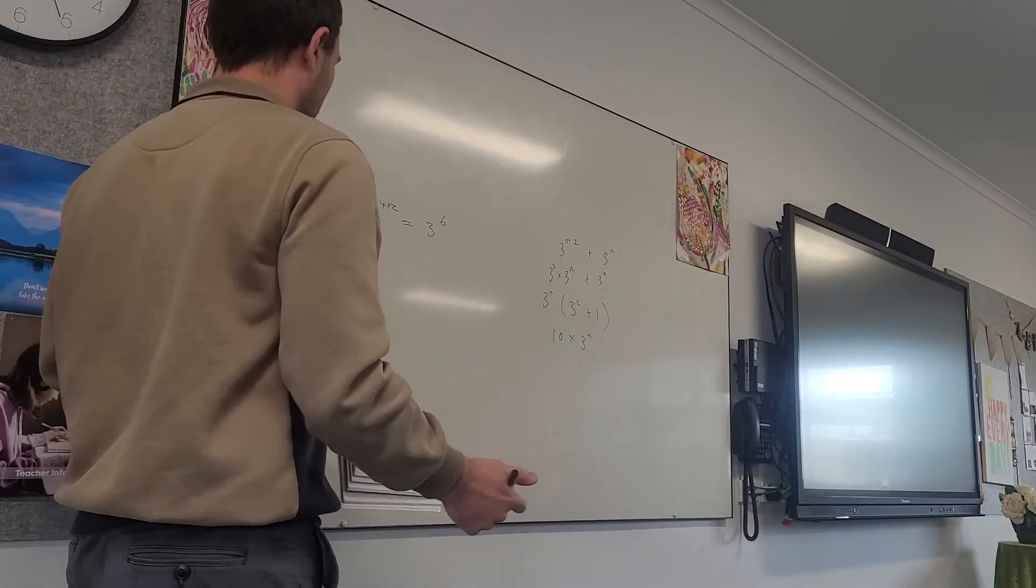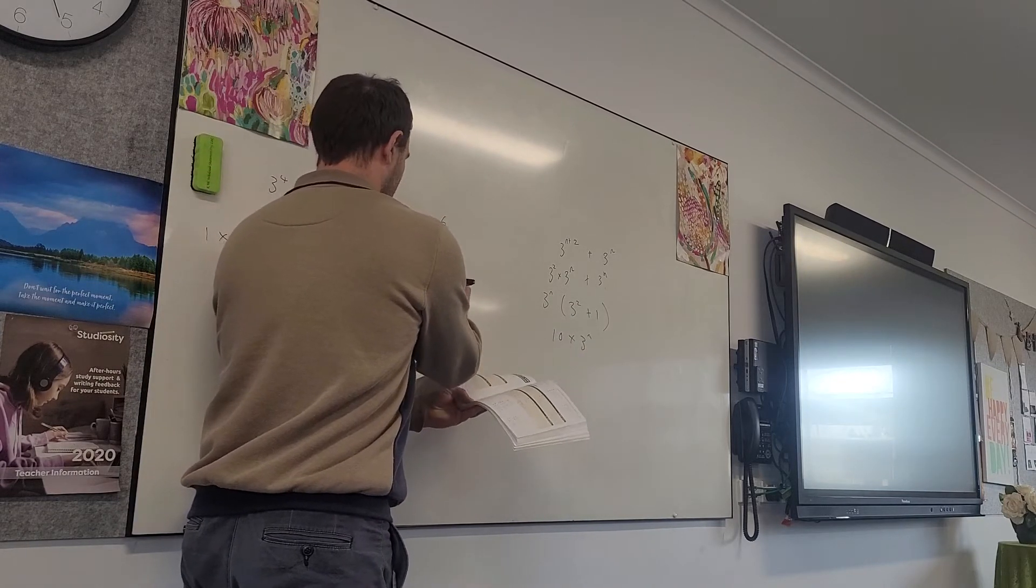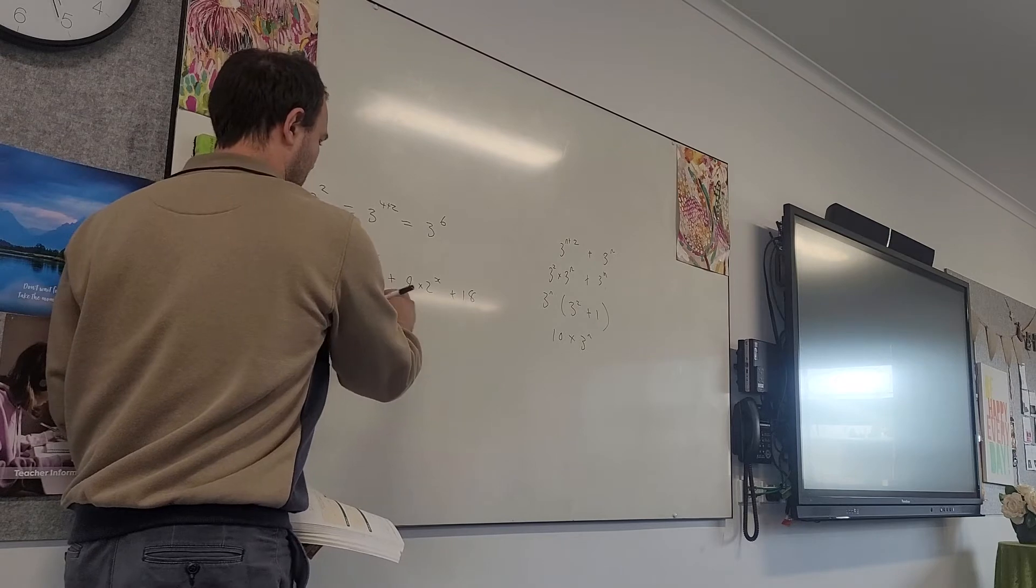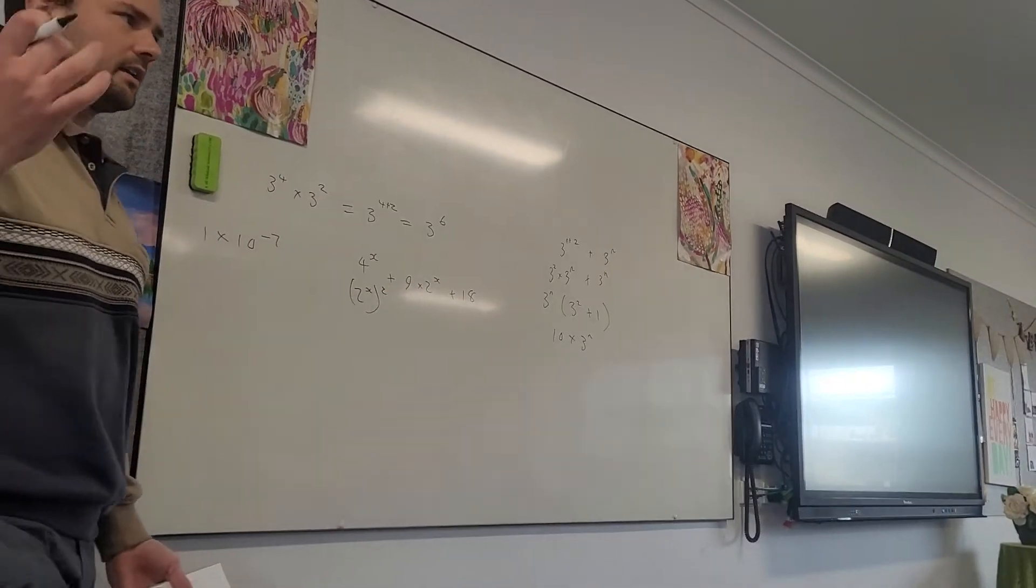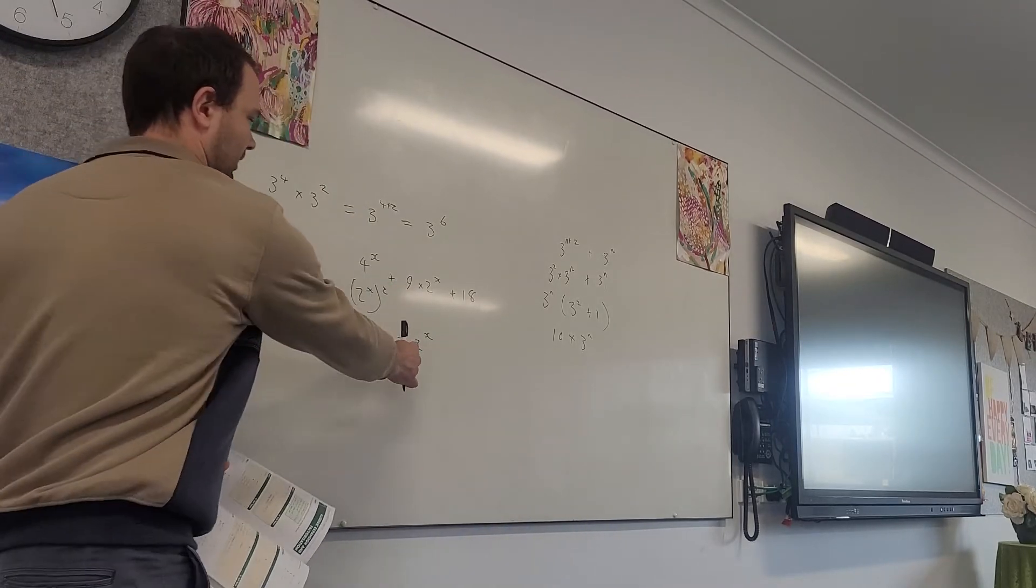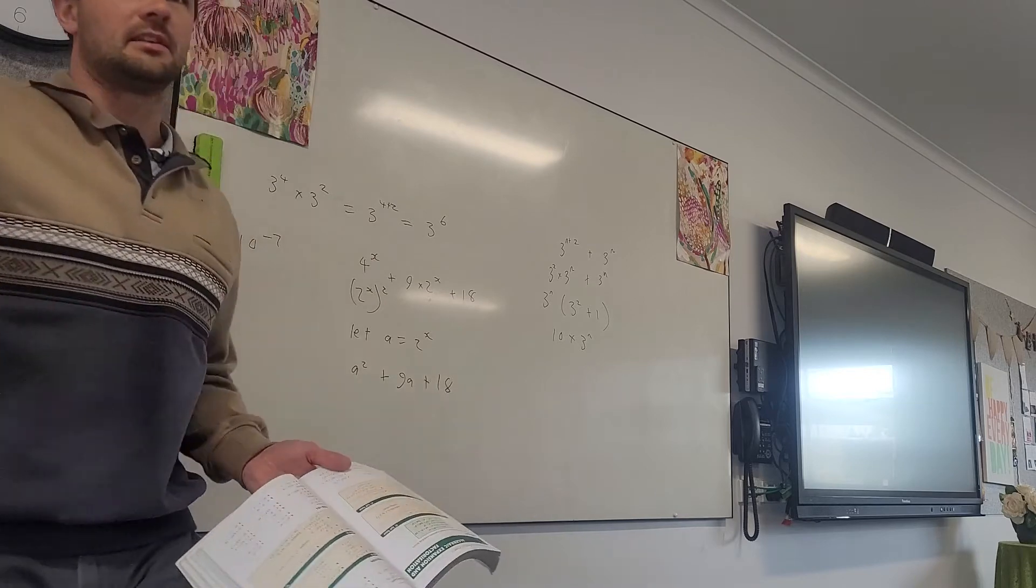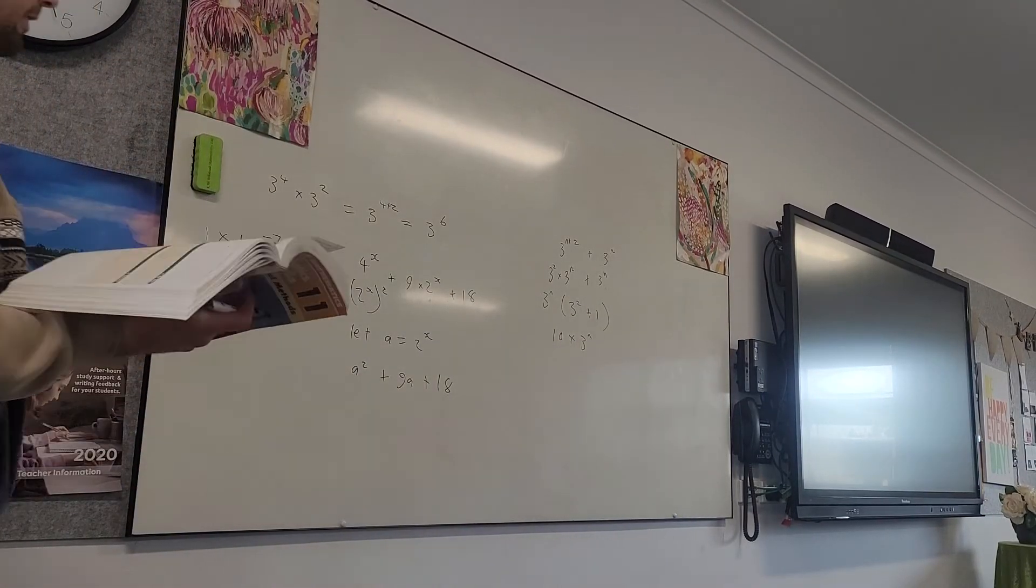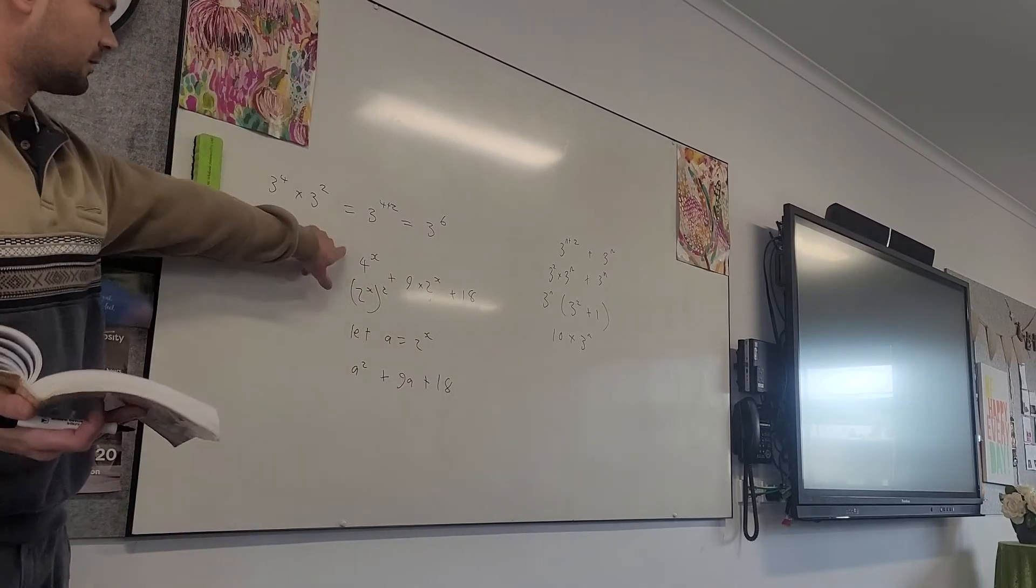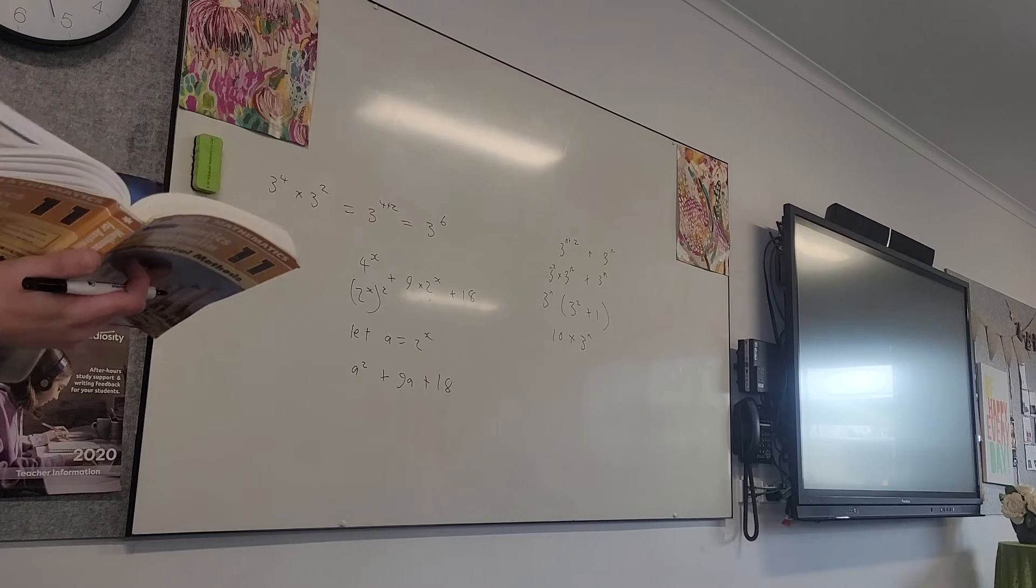The other trick we did there as well is when we had something like 4 to the x plus 9 times 2 to the x plus 18. And we recognized that is 2 to the x squared. And we said, why don't we do something like, let a be equal to 2 to the x. So here we can see it as a quadratic. We're going to have a squared plus 9a plus 18. And something like that, it's a lot easier for us to see how to factorize it than when it's written like this or like that. All right, so that's still there, recognizing we can write pain. Everyone remembering that? Yep, good. So good? Good.